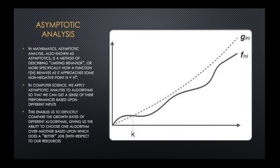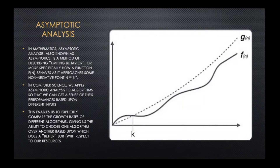Asymptotic analysis enables us to explicitly compare and define the growth rates of performance for algorithms, so we can say: for a given input size approaching some value, maybe this algorithm is more efficient to use than that one. It gives us the ability to compare and pick what's best for our needs.